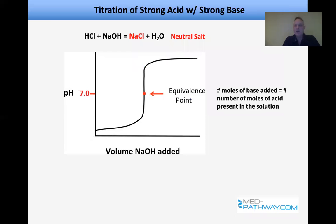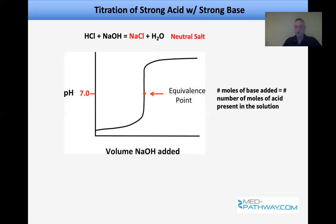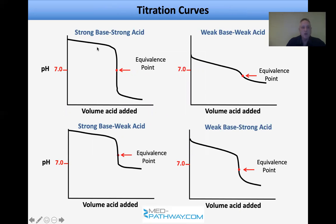Let's look at titrations. When titrating a strong acid with a strong base — for example HCl with NaOH — at the equivalence point, where moles of acid equal moles of base, the product is a neutral salt (sodium chloride) and water. So the equivalence point for strong acid/strong base is pH 7. It's dangerous to call this the 'neutral point' in general, because the equivalence point is only pH 7 for strong acid with strong base.